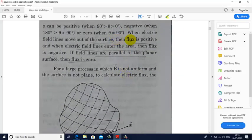This angle phi can be positive, negative, or zero. And one thing that you need to remember is when electric field lines move out of the surface, then flux is positive, and when electric field lines enter the area, then flux is negative. If the field lines are parallel to the surface, then what will be the angle between the surface and the direction of electric field? In that case, angle will be 90 degrees.